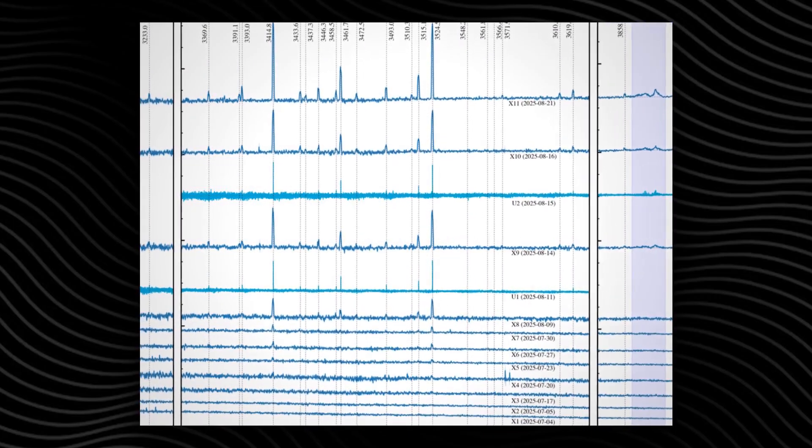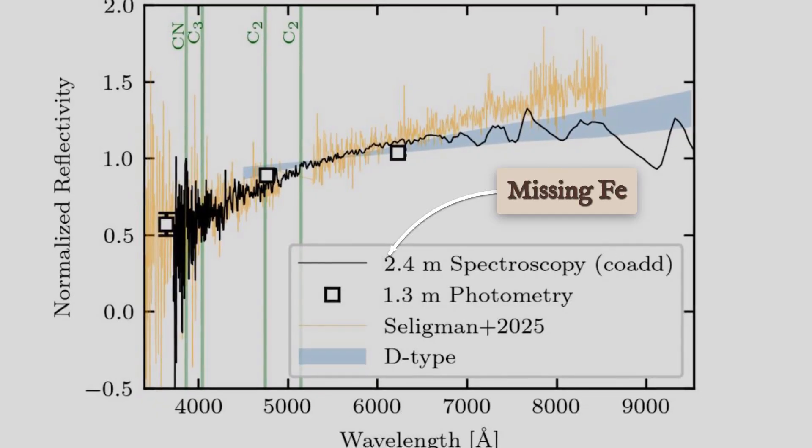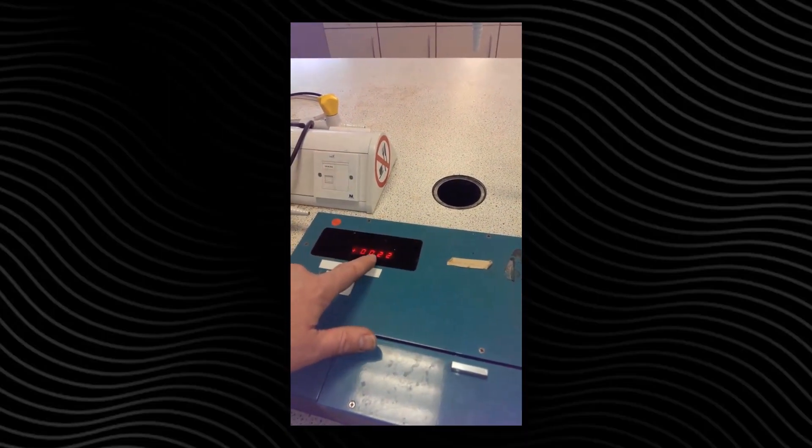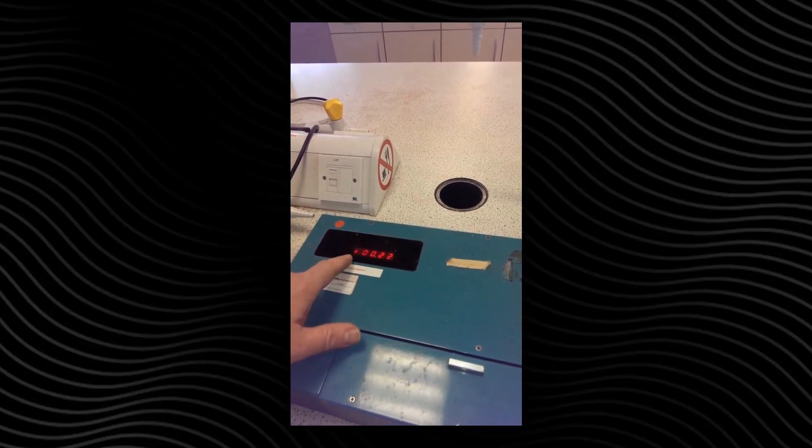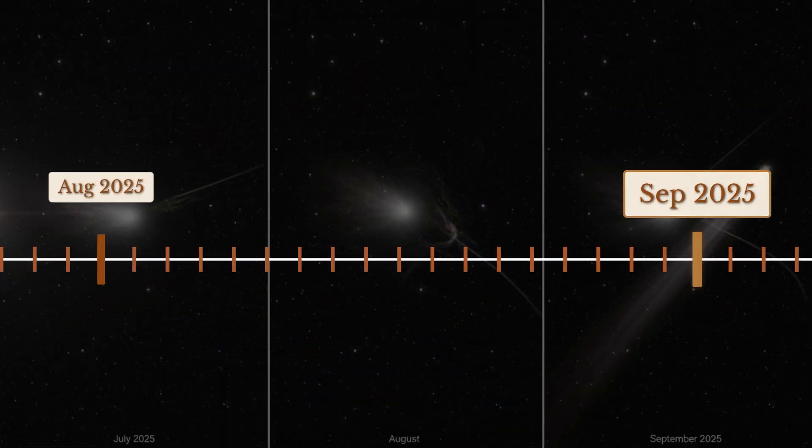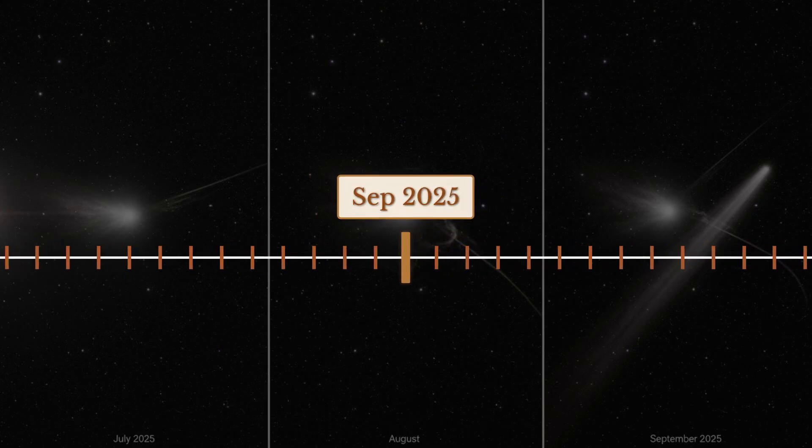VLT's late-summer spectra revealed a surge in neutral nickel lines, with iron lines conspicuously absent, a composition rarely seen. Polarimetric measurements, if published, could confirm whether millimeter-scale grains dominate the dust, as some models suggest. These three frames—July, August, September—anchor the timeline of the tail flip and set clear reference points for testing competing models.